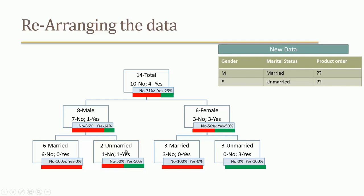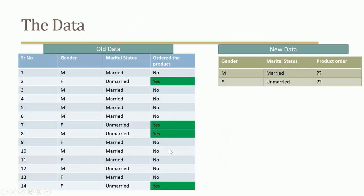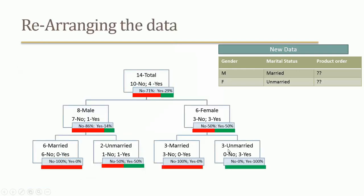Out of 2 unmarried males, 1 ordered and 1 did not order. Now within the 6 female customers, further segmenting by marital status: 3 are unmarried and 3 are married. Out of 3 married females, none ordered. Out of 3 unmarried females, all ordered the product — 100% order rate for unmarried females.